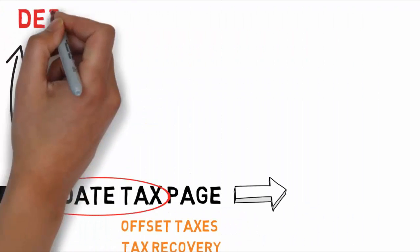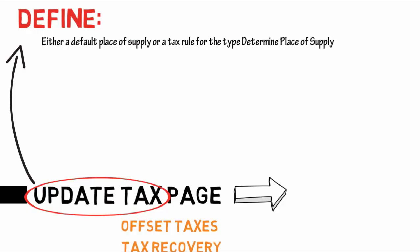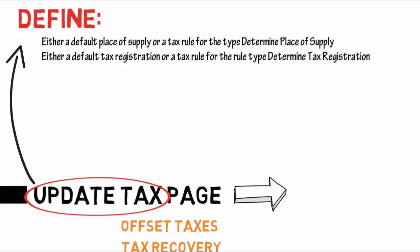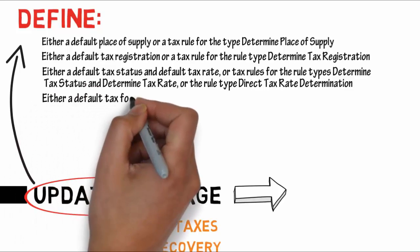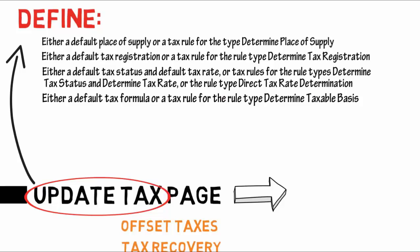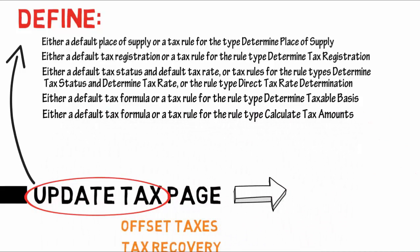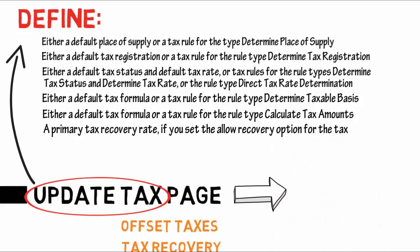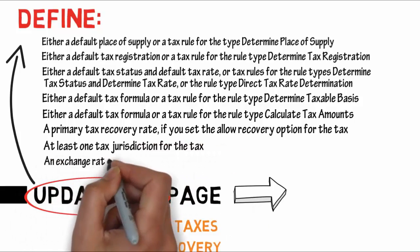For this, you will have to define some points: either a default place of supply or a tax rule for the rule type determined place of supply; either a default tax registration or a tax rule for the rule type determined tax registration; either a default tax status and default tax rate or tax rules for the rule types determine tax status and determine tax rate, or the rule type direct tax rate determination; either a default tax formula or a tax rule for the rule type determine taxable basis; either a default tax formula or a tax rule for the rule type calculate tax amount; a primary tax recovery rate if you set the allowed recovery option for the tax; at least one tax jurisdiction for the tax; and an exchange rate type if the tax is used in cross-border transactions.